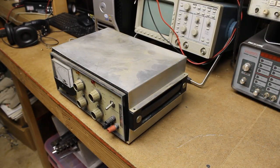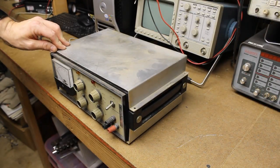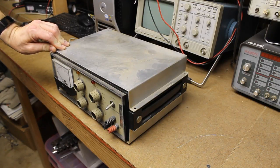Alright everybody, welcome back. Today we have a Heathkit Low Voltage Power Supply, Model IP27.